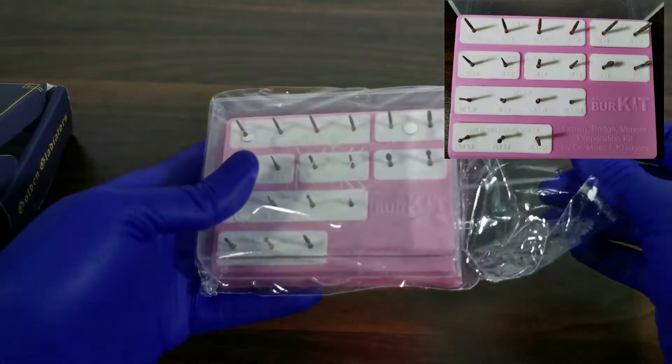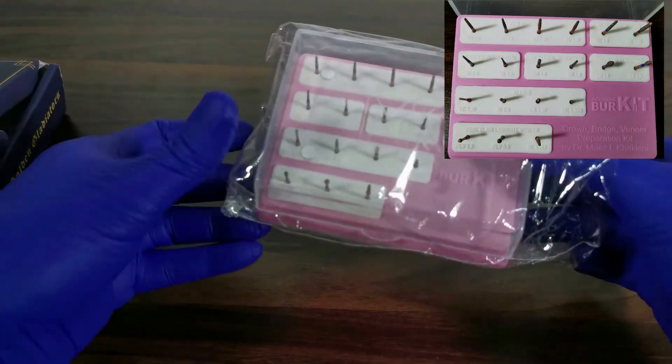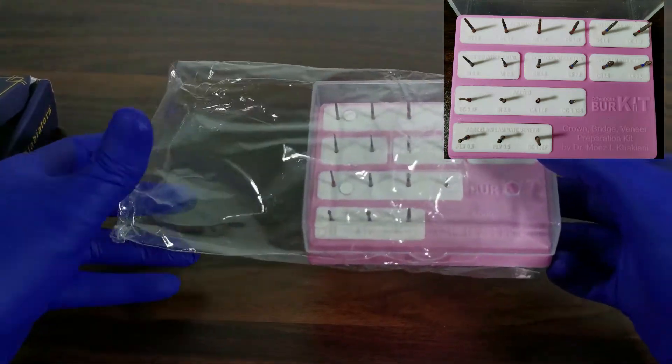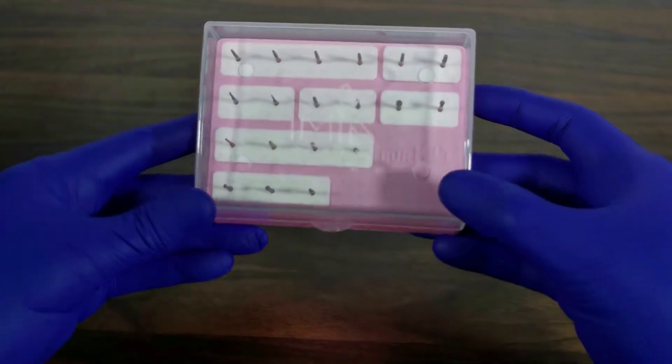The 19 gold series burrs in this kit are strategically divided into 7 clusters, each designed for a specific prosthetic material purpose.